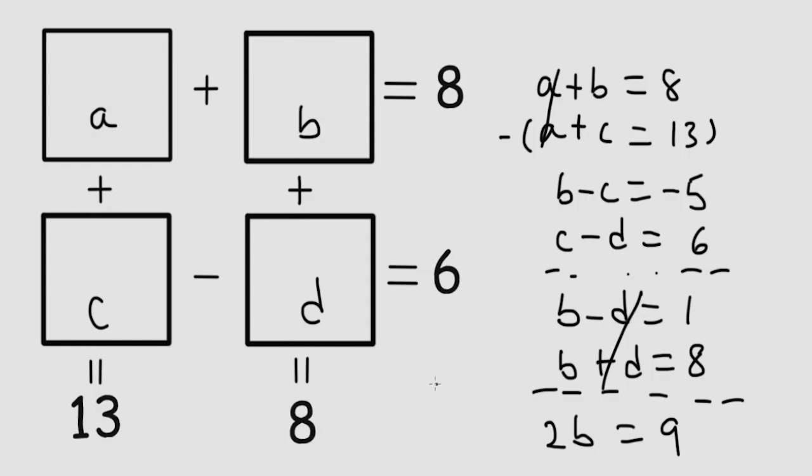So 2B is equal to 9 or B is equal to 9 divided by 2 is 4.5. So B over here is 4.5. So what plus 4.5 gives you 8? 3.5. We have 4.5 over here and we have 8 again. So 3.5 will give you 8.